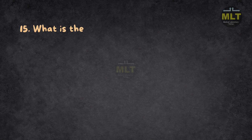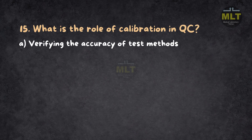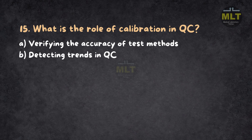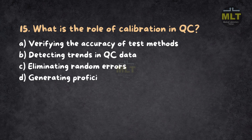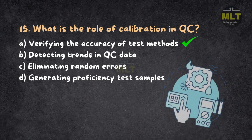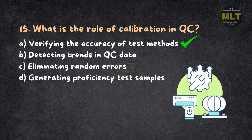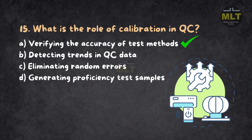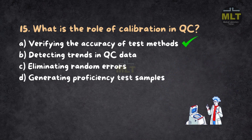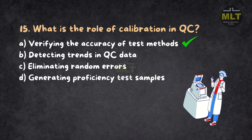Question 15: What is the role of calibration in QC? a. Verifying the accuracy of test methods. b. Detecting trends in QC data. c. Eliminating random errors. d. Generating proficiency test samples. Correct answer: a. Verifying the accuracy of test methods. Calibration ensures that equipment provides accurate results by comparing them to a standard. It does not eliminate random errors but establishes baseline accuracy. Detecting trends or proficiency testing is not its primary role.